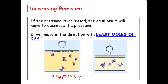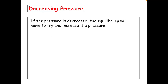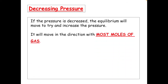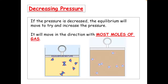The equilibrium will move towards N2O4, which is colourless, while NO2 is a brown gas. In the video, it won't become completely colourless, but it will become lighter because there will still be some molecules of NO2 giving it a brown colour. When the pressure is decreased, the equilibrium will move to try and increase the pressure — moving to the side with the most moles of gas.